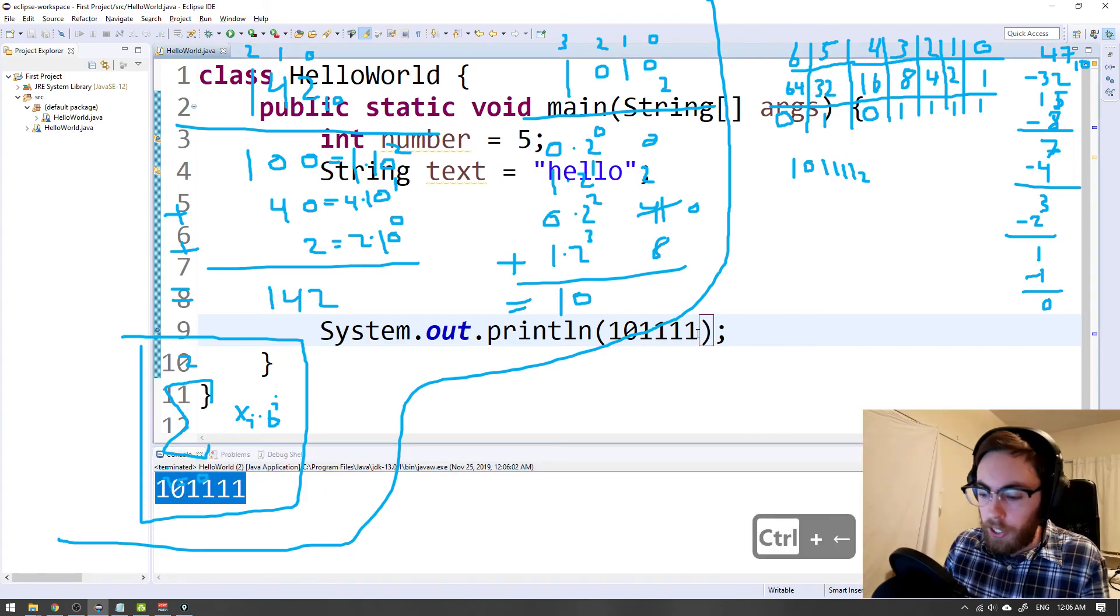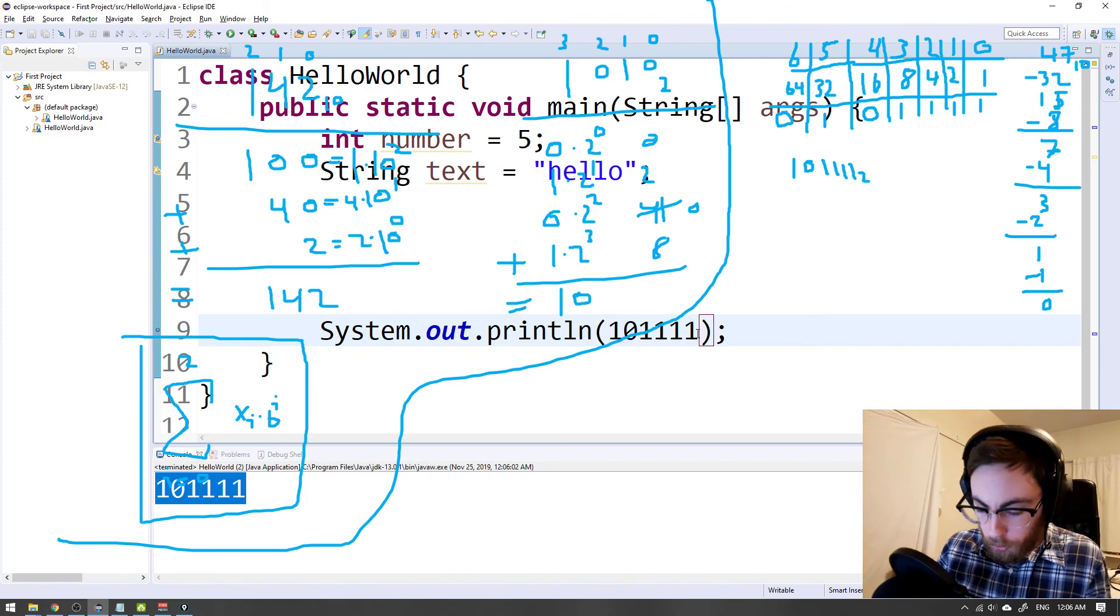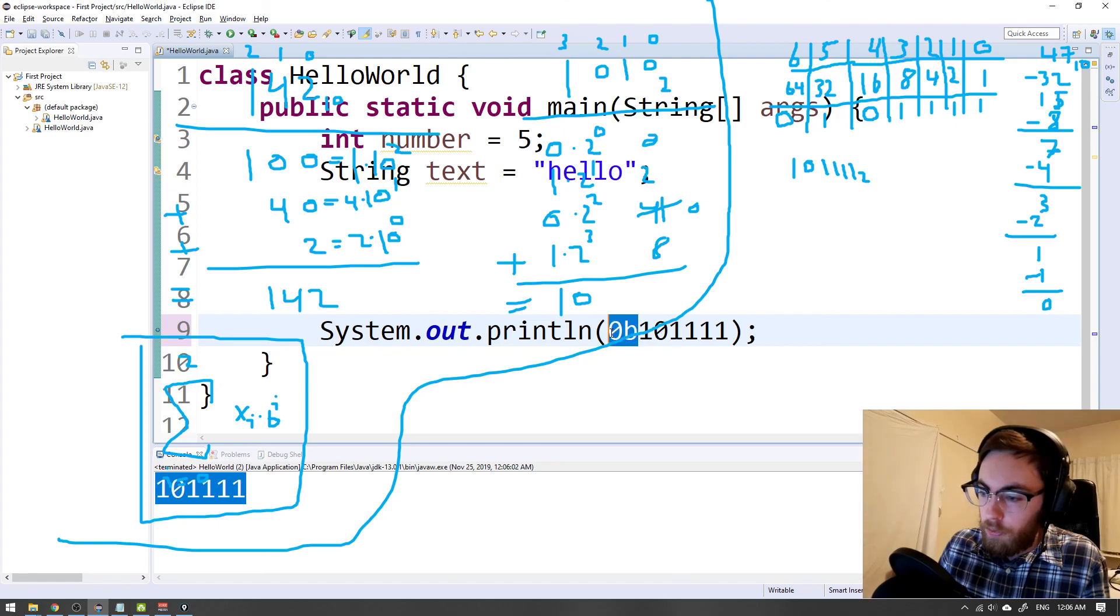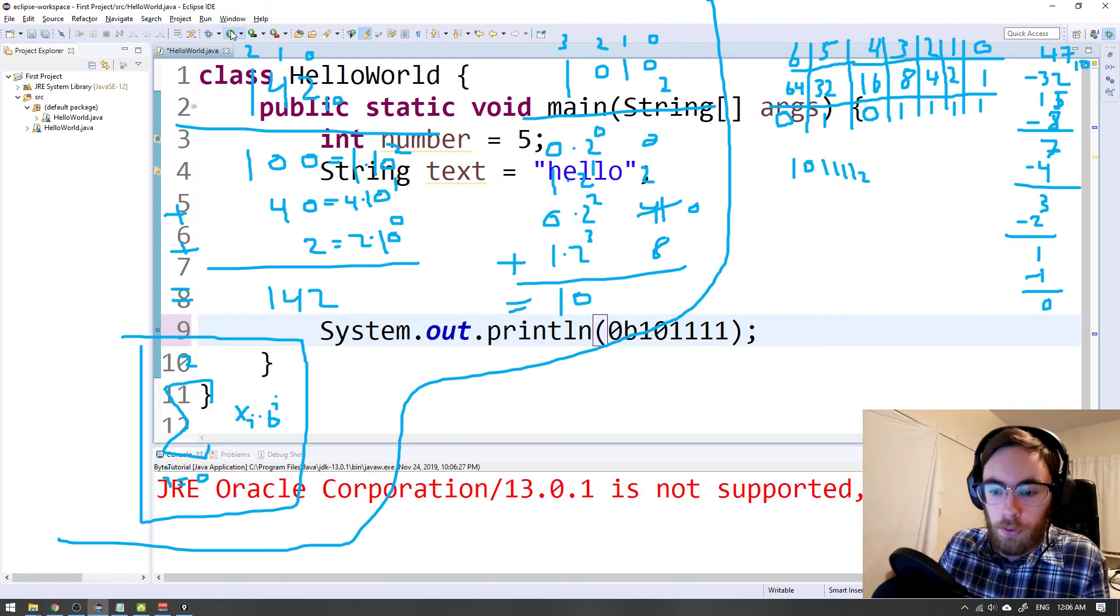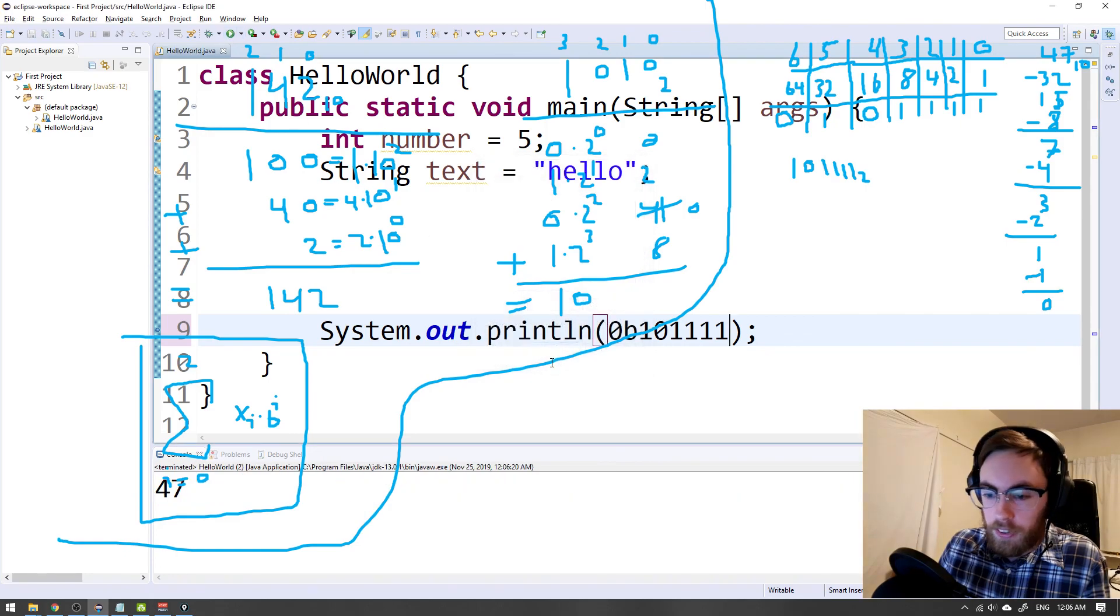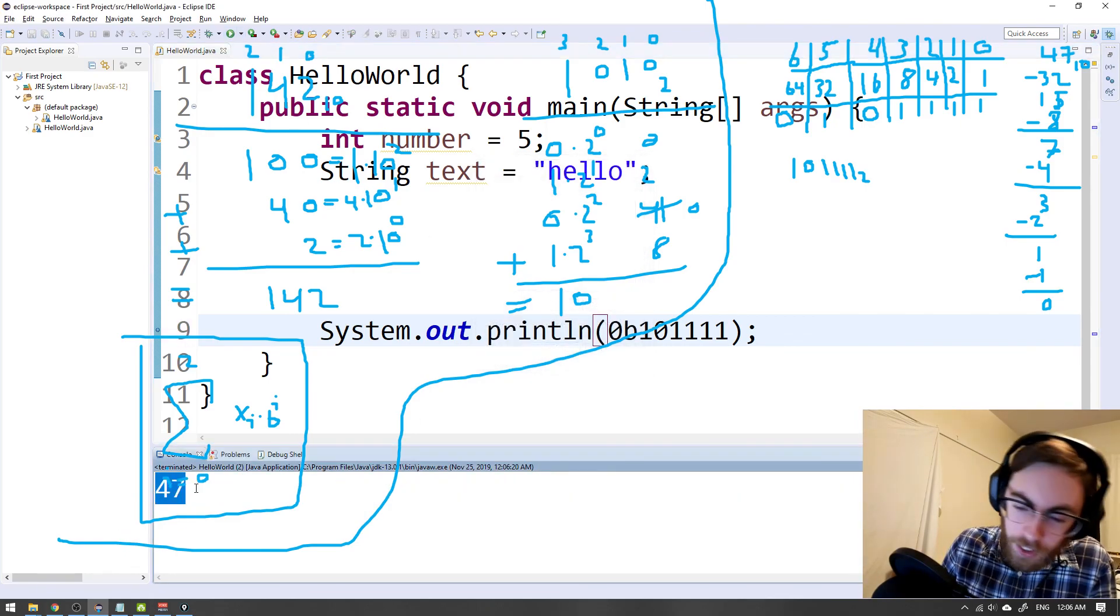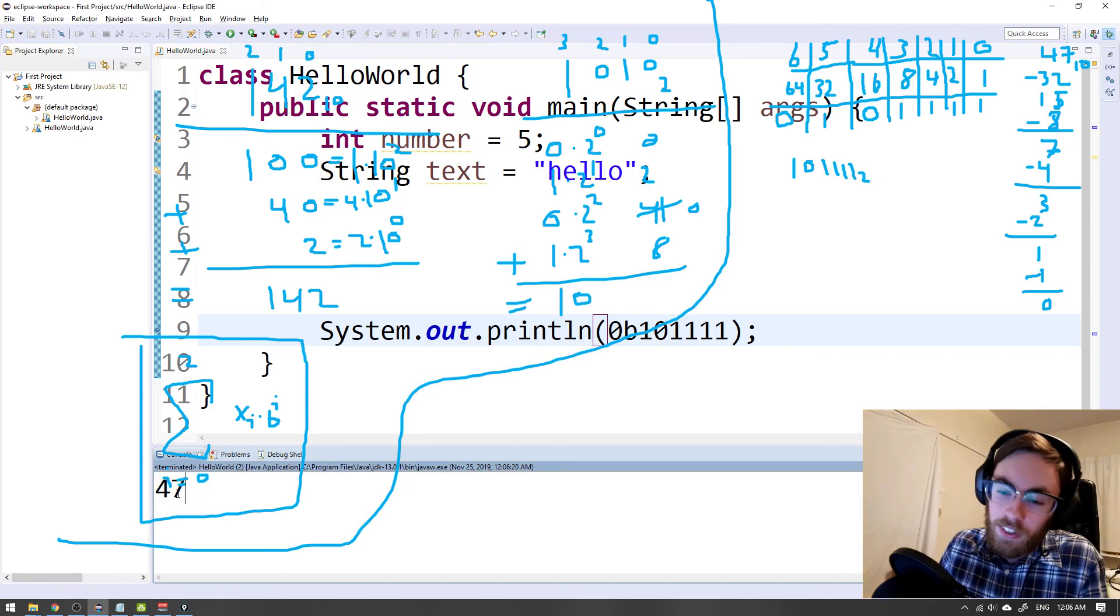We want to operate in the binary domain. So to do that, we write 0 and then B, saying that these are bits that we are trying to print out. And now if we hit run, you will see that we get the value 47 just as expected.